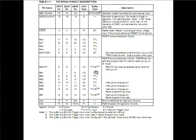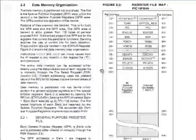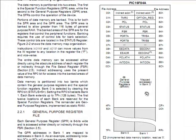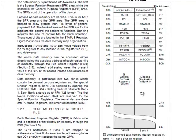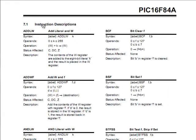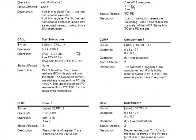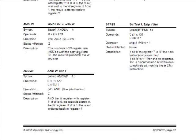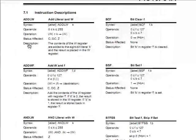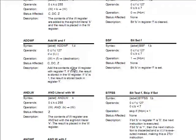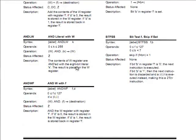Another important thing I want to show you is the register structure of this microcontroller. This is the register structure diagram, and you must have a basic understanding of these registers because we are always writing programs to them. There are two sections of registers named Bank 0 and Bank 1. Also important are the instruction descriptions — these are the 35 instruction sets of the PIC16F84A, each with a description explaining its function. We use these instructions to write assembly code with MPLAB.